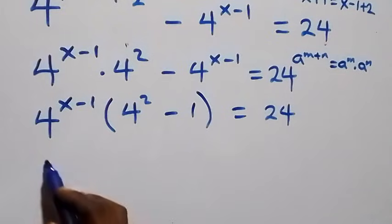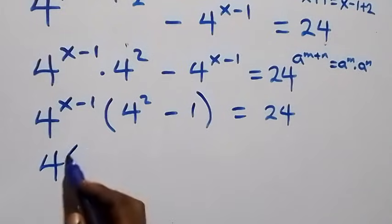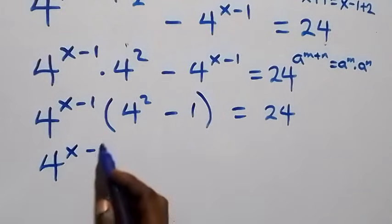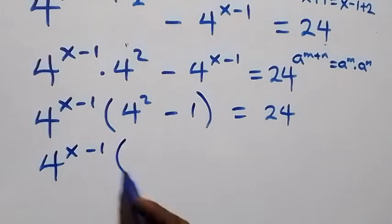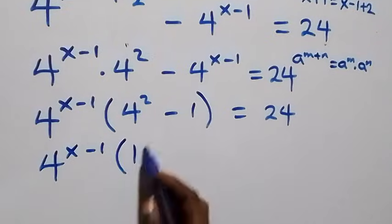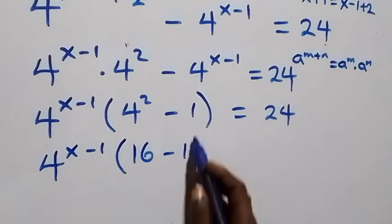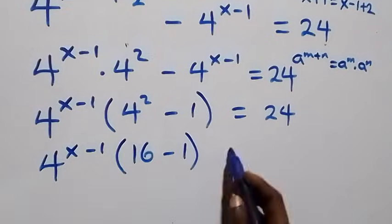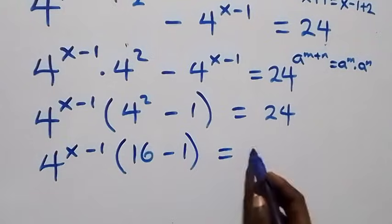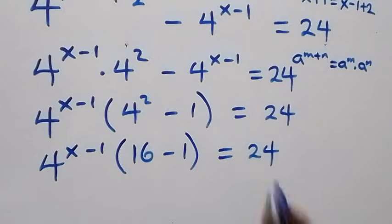That is, this is the same thing as 4 raised to power x minus 1, into bracket 4 squared — that's 16 — minus 1, in bracket, equals to 24 on this side.